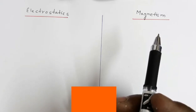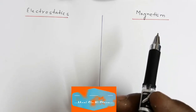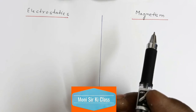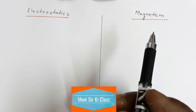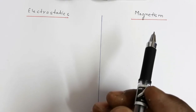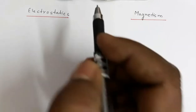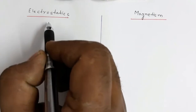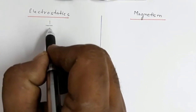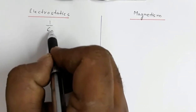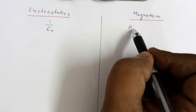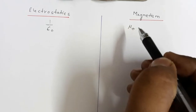In this video we are going to see a brief comparison between the formulas used in electrostatics and magnetism. The first comparison is: in electrostatics we use 1/ε₀, whereas here we use μ₀, the permeability.